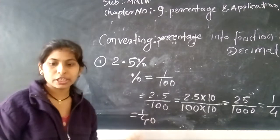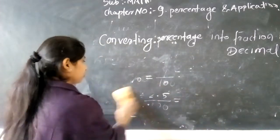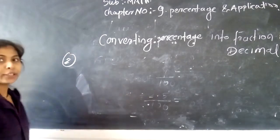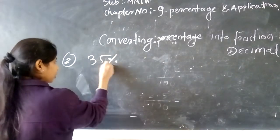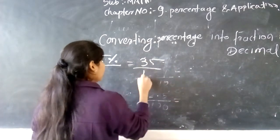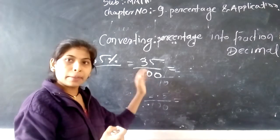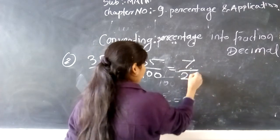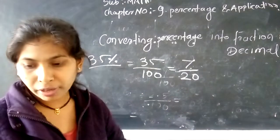ऐसे आपको solve करने हैं। अभी second question — second question है हमारा 35 percent। 35 percent — तो percent की जगह हम क्या लिखेंगे? 35 divided by 100। फिर इस पे हम HCF से divide करेंगे — 7 से divide करेंगे। हमारा answer आया fraction में: 7 divided by 20। Okay?